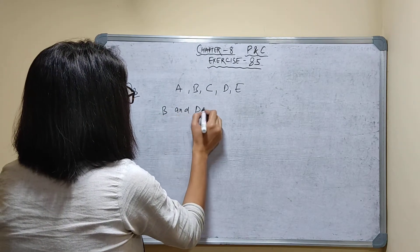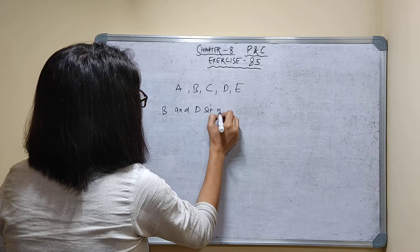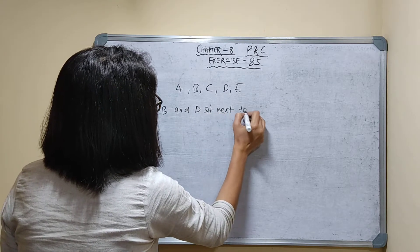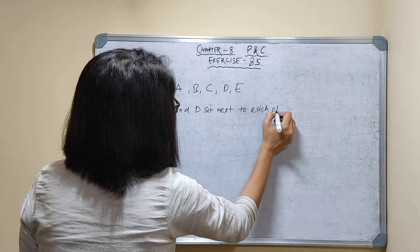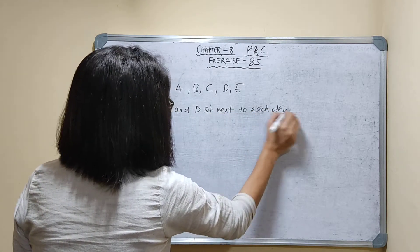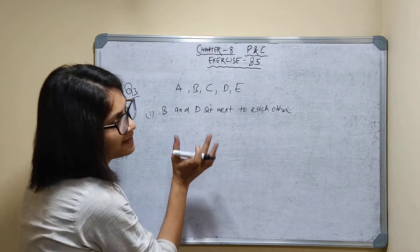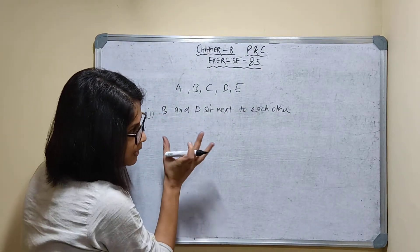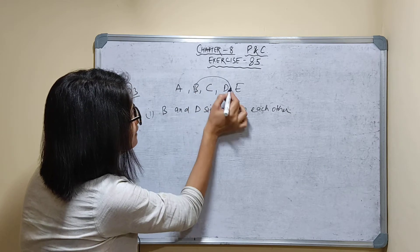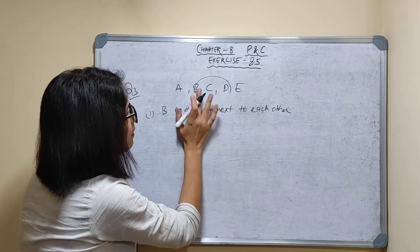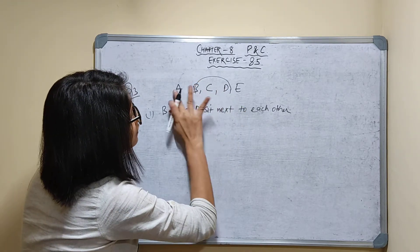B and D sit next to each other — this is the first part. So, treat B and D as 1 unit. I am treating B and D as 1.